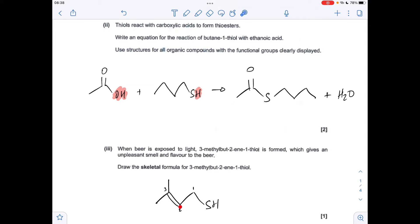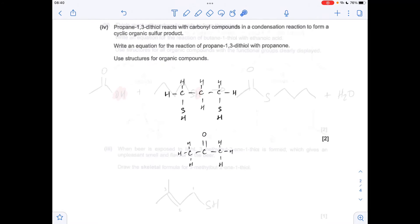The last part of A, we're told propane-1,3-dithiol, so that's this thing here. I've put the SH groups pointing down, you'll see why in a second. So they react with carbonyl compounds in a condensation reaction, so we're going to form in this case a water molecule with the two H's on the thiol groups and the O from the carbonyl group, and we need to form a cyclic organic sulfur product.